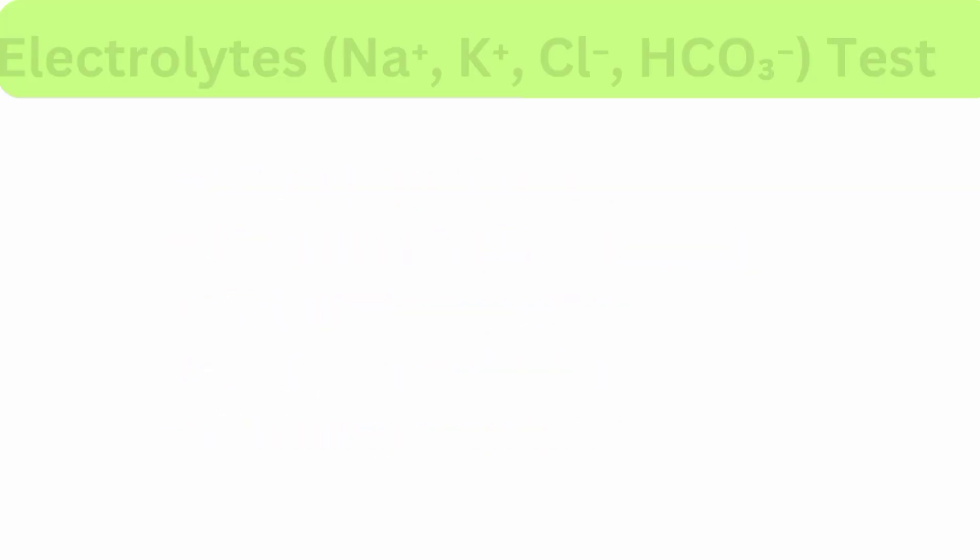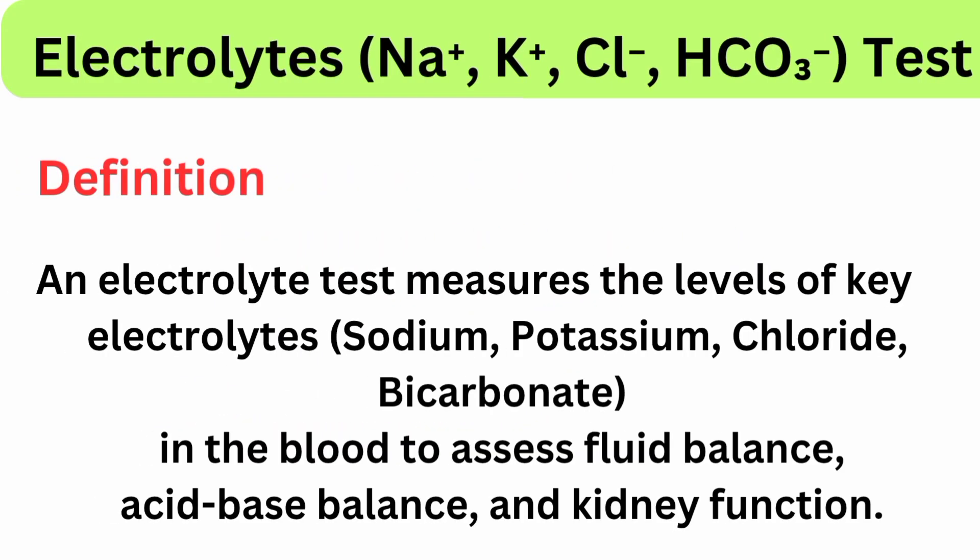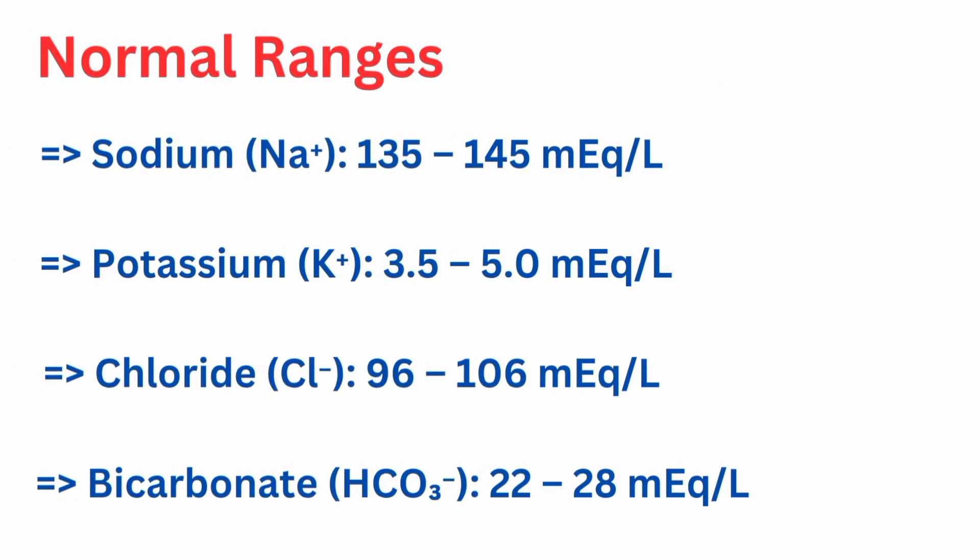Electrolyte test: measures the levels of key electrolytes — sodium, potassium, chloride, and bicarbonate — in the blood to assess fluid balance, acid-base balance, and kidney function. Normal ranges: sodium is 135 to 145 mEq/L, potassium is 3.5 to 5.0 mEq/L, chloride is 96 to 106 mEq/L, and bicarbonate is 20 to 28 mEq/L.